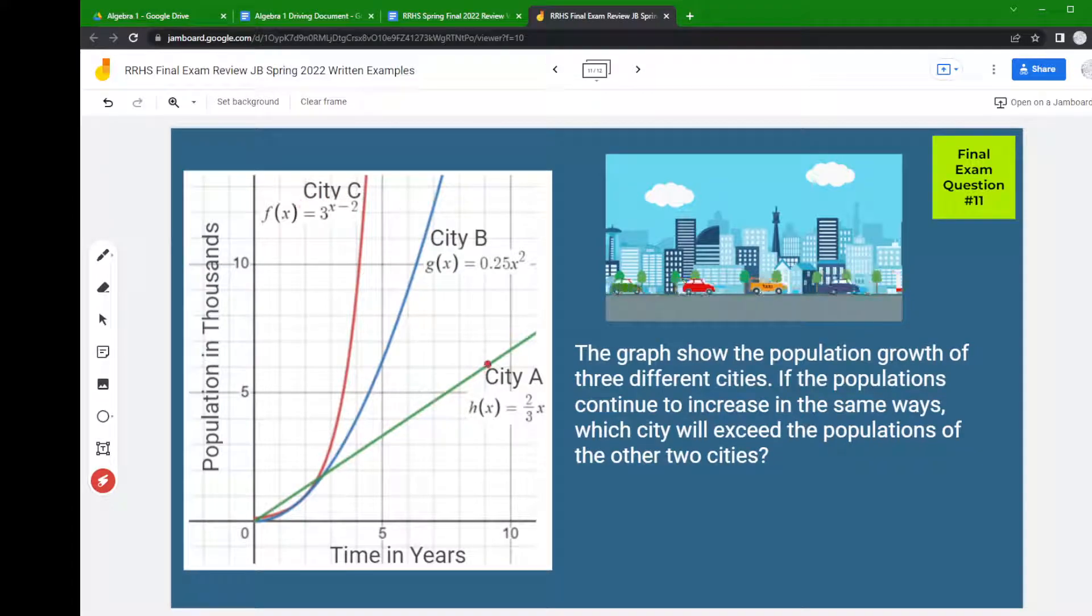Notice you have a linear graph because you have just an x. You have a quadratic where we cut off what the x was here, and then you have an exponential.